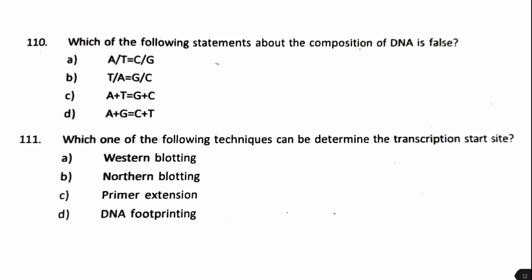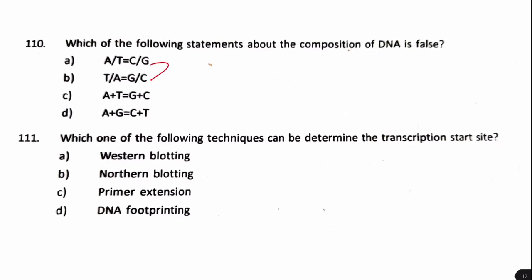Next question: which statement about the composition of DNA is false? A/T = C/G and T/A = G/C are essentially the same and are true. A + G = C + T is also true (Chargaff's rule). However, A + T = G + C is false, as the ratio of purines to pyrimidines equals one, but A + T does not necessarily equal G + C. Answer: option C.